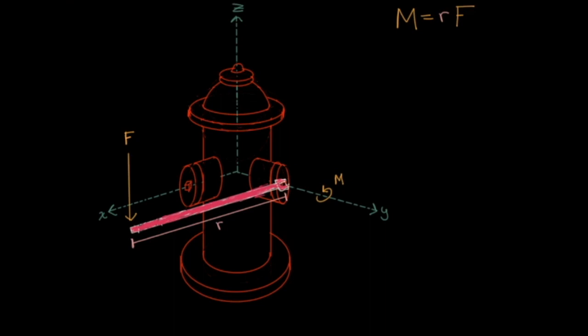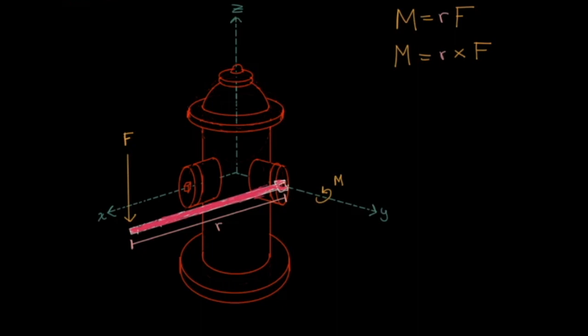Now, let's formalize our representation of the moment as a vector, by writing it as M equals R cross F. That is, the cross product of R and F. If you aren't comfortable with cross products, I've made a video about how to calculate cross products, and I'll link it here.